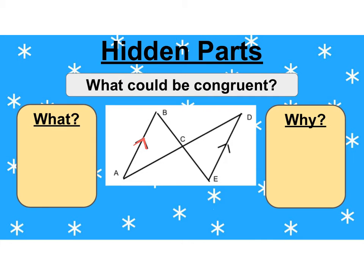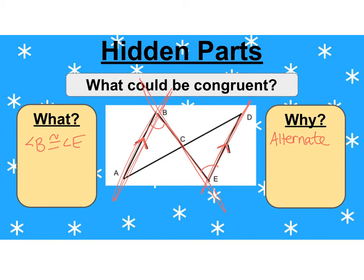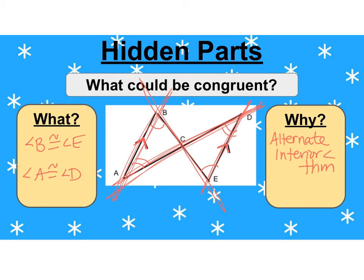We have some more parallel lines — parallel arrowheads. And this is the bow tie picture again. One line could be the transversal, making those angles congruent — so angle B is congruent to angle E because of the alternate interior angle theorem. Or this other line could be the transversal, making those congruent — so angle A is congruent to angle D, same reason: alternate interior angle theorem. When the bow tie picture has parallel lines, it's hiding both of those congruent angle pairs.